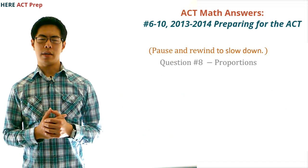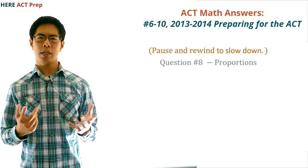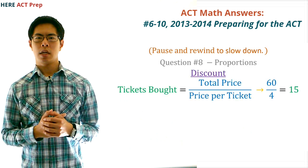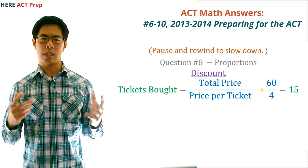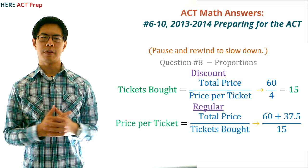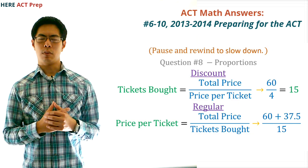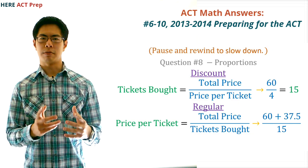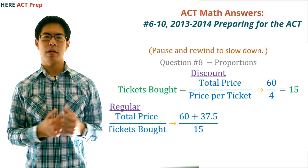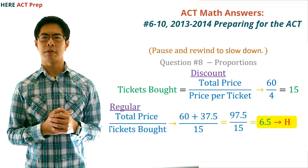Question number 8. The concept this question tests is proportions. The easiest way to do this question is to first calculate how many tickets he bought at the discount price, which is 60 divided by 4, which equals 15. Next, we figure out the total amount he would have spent if he had bought the tickets at regular price, which is $60 plus $37.50, which is $97.50. Finally, we divide 97.5 by 15, the number of tickets he bought, to get $6.50.